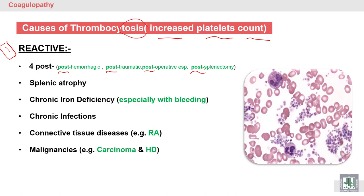The spleen is a place for the pooling or sequestration of platelets, so removal of the spleen leads to release of more platelets into the blood and thrombocytosis. Similarly, splenic atrophy — which occurs in sickle cell disease and other causes of splenic atrophy such as trauma or surgery — has the same effect.